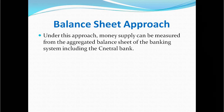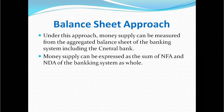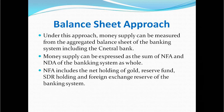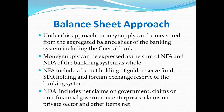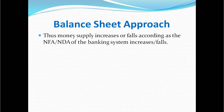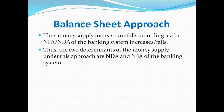Under the balance sheet approach, money supply can be measured from the aggregated balance sheet of the banking system, which includes the balance sheet of the central bank. Money supply is expressed as the sum of net foreign assets and net domestic assets of the banking system. NFA includes net holdings of gold, reserve funds, SDR holdings, and foreign exchange reserves. NDA includes net claims on government, claims on non-financial government enterprises, claims on the private sector, and other items. Thus, money supply increases or falls as NFA or NDA of the banking system increases or falls.